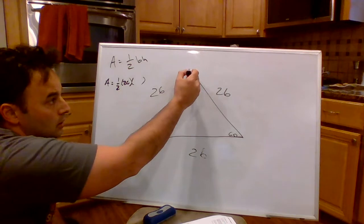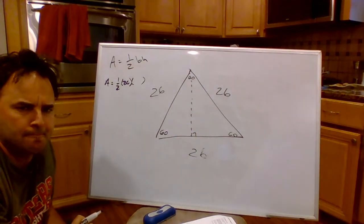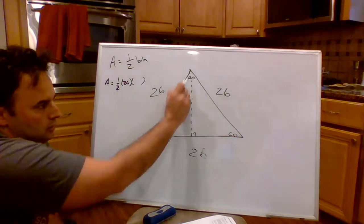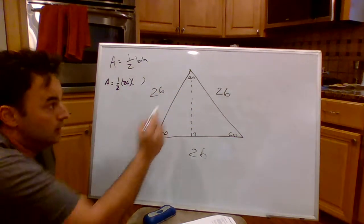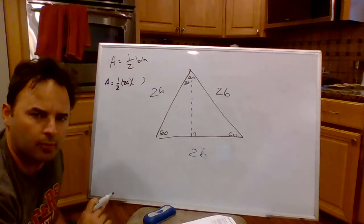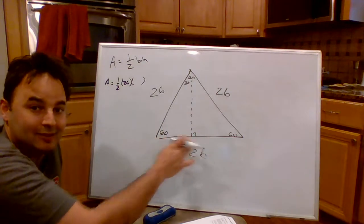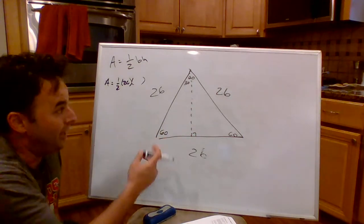We want to find the area. Area is one-half base times height. Here's my base. So one-half 26 times H. Well, what is the height of a triangle? We just drop the altitude. And the altitude, remember, comes from the vertex. Well, what triangle did I just create here? A 30-60-90 triangle.